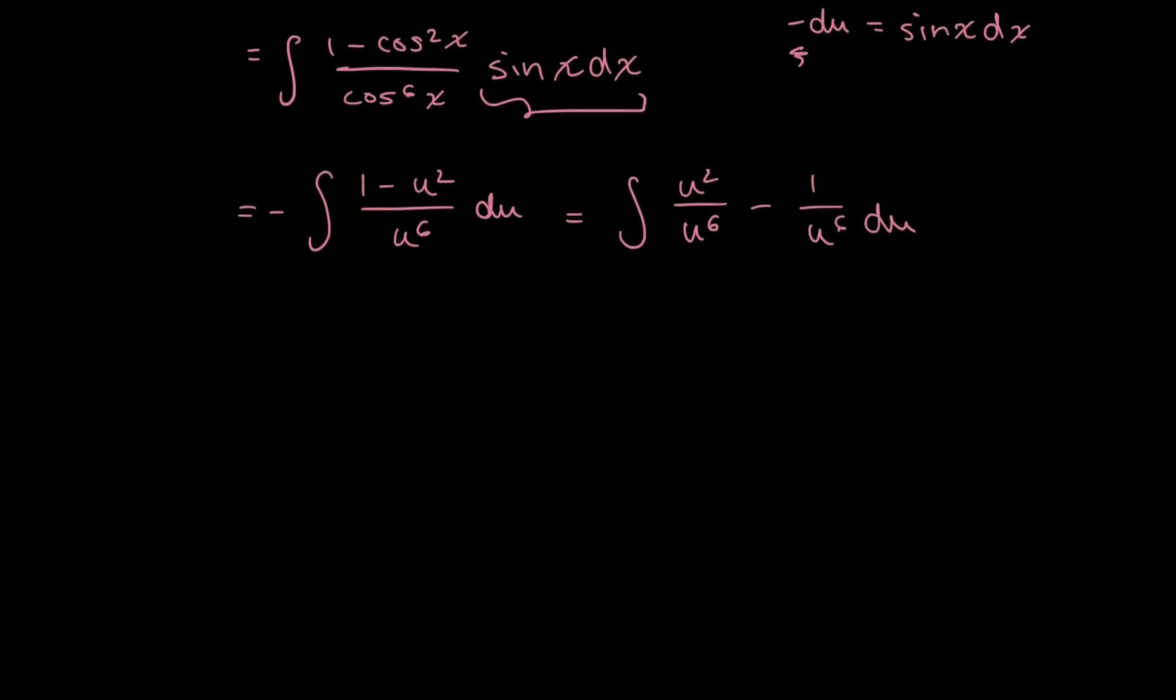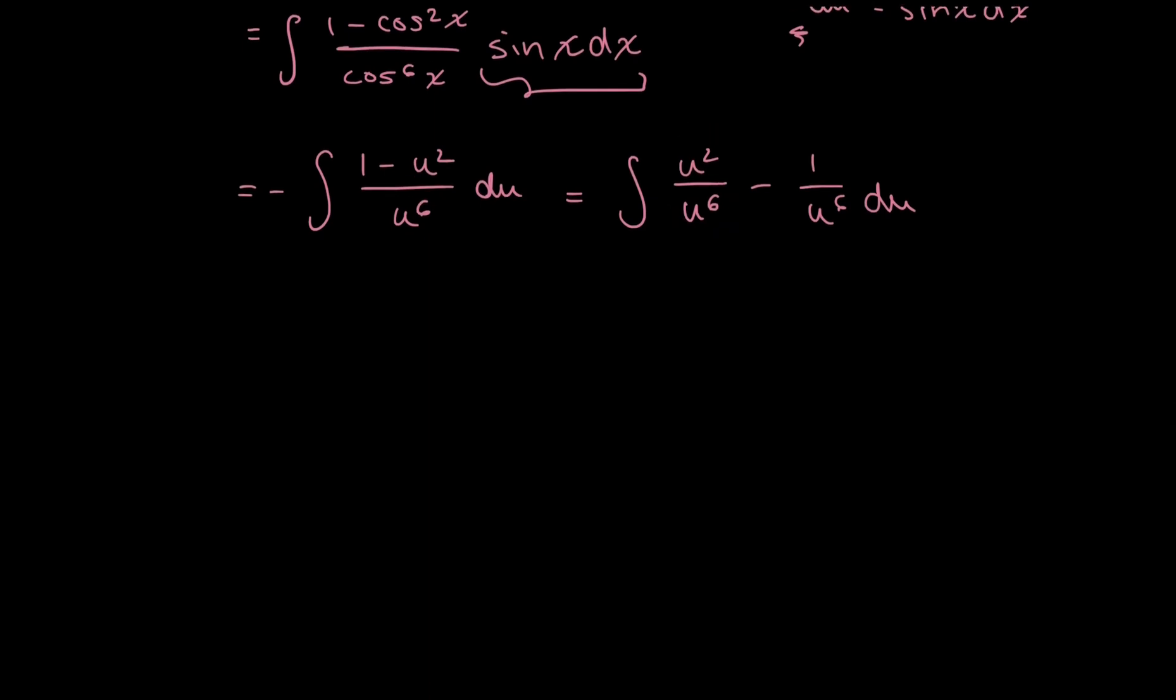Now I can rewrite this. I can simplify this further, this term, and also write it as not a fraction. So I'll have the integral of u to the power of negative 4 minus u to the power of negative 6 du. The reason I did this is because I think this is the easiest way to integrate this. But you could solve it from here. You could go ahead and simplify this term and integrate it however way you'd like. But I think using the power rule here is really easy.